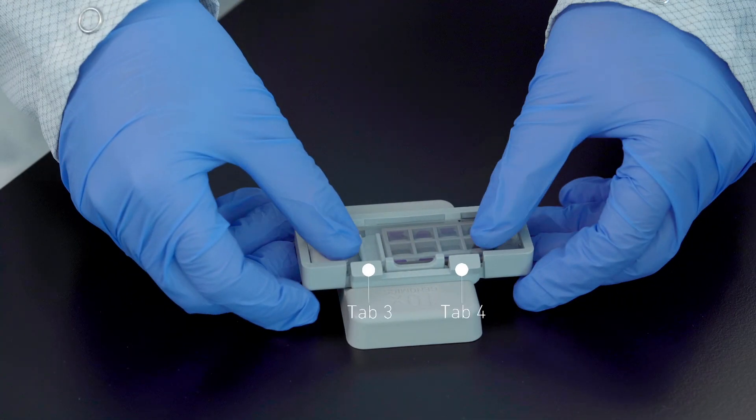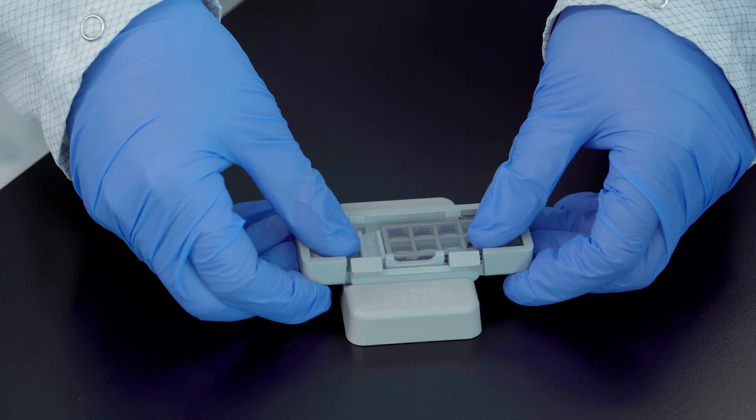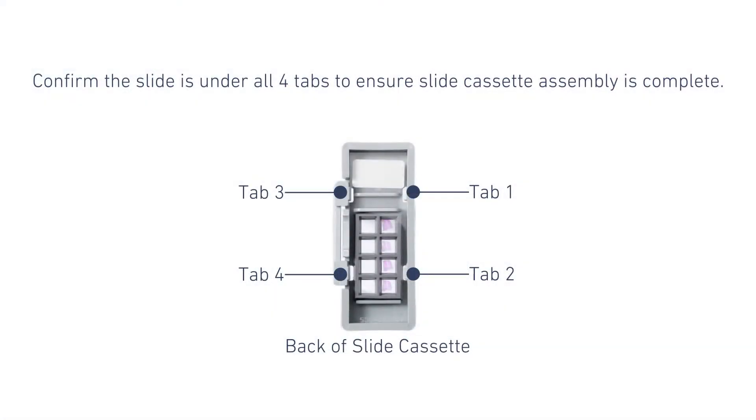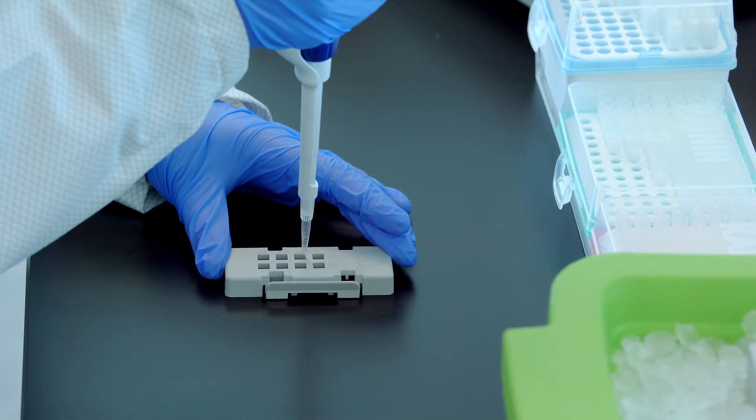Remove the slide cassette from the alignment tool while pressing the slide against the gasket. We have assembled the slide cassette. Next we will permeabilize the tissue.